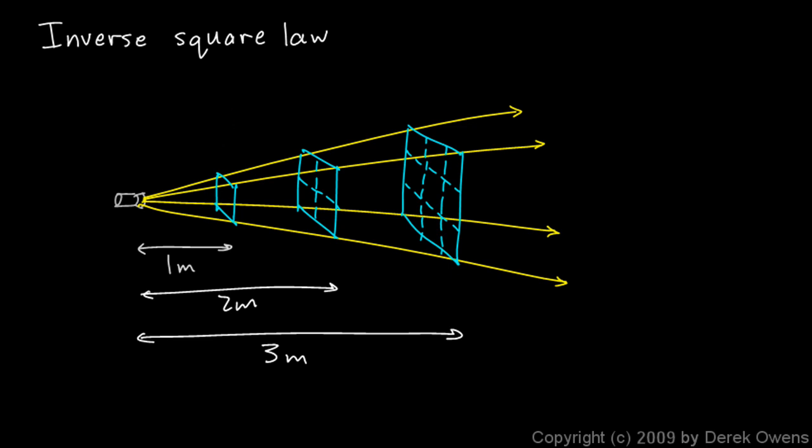And you can continue this relationship. At four times the original distance, the amount of illumination would be cut to one-sixteenth. At five times the distance, it would be cut to one-twenty-fifth. At ten times the original distance, the illumination would be cut to one-one-hundredth.